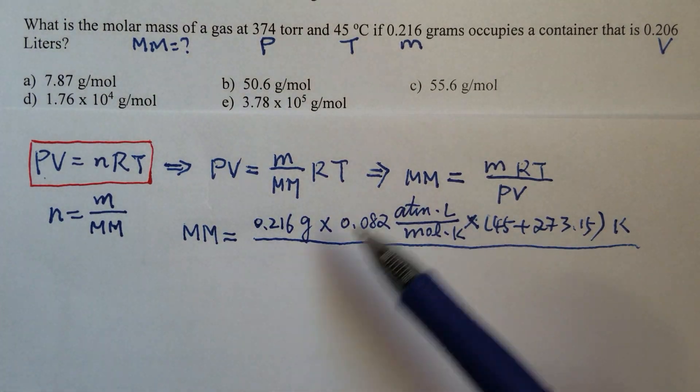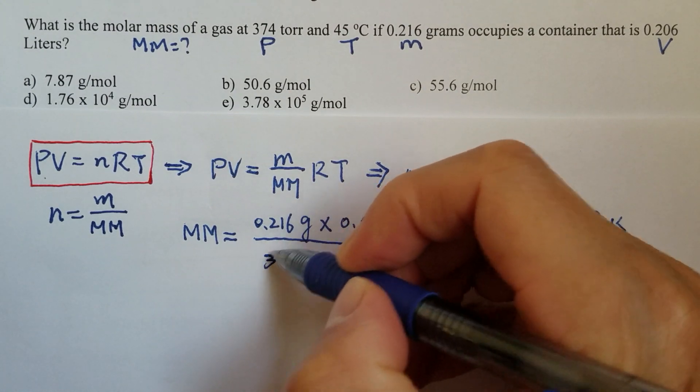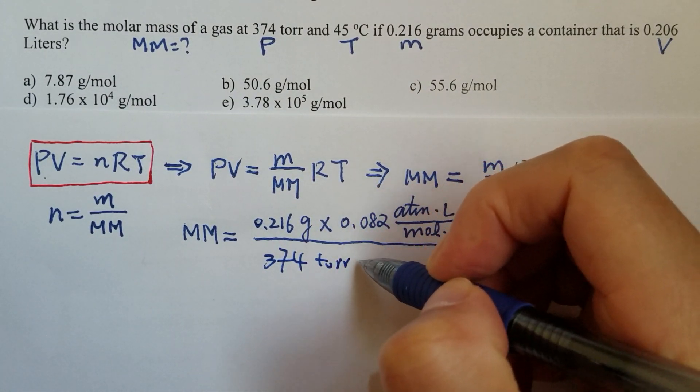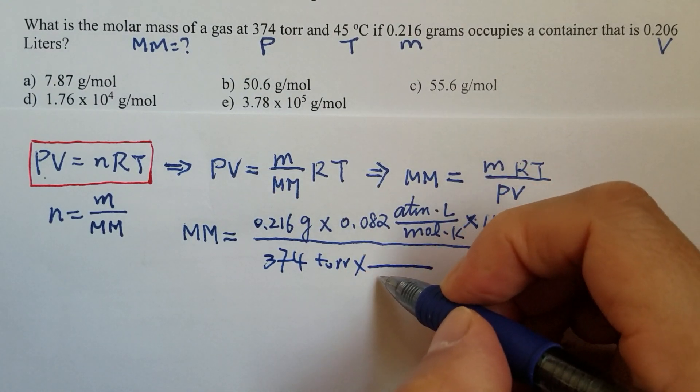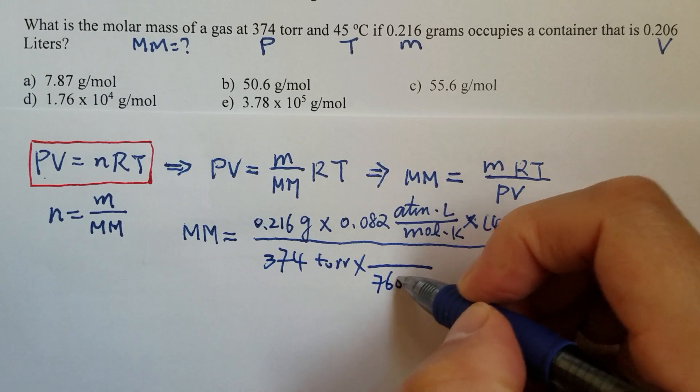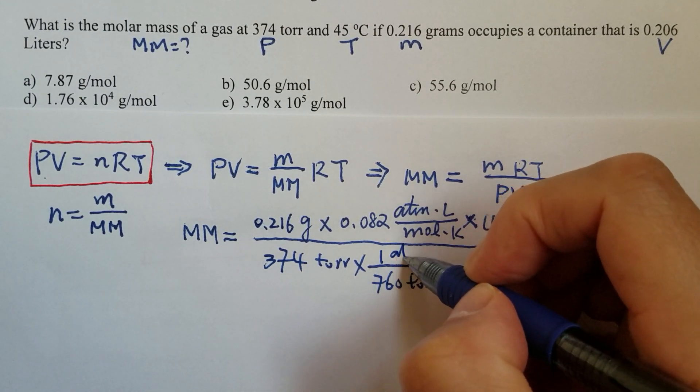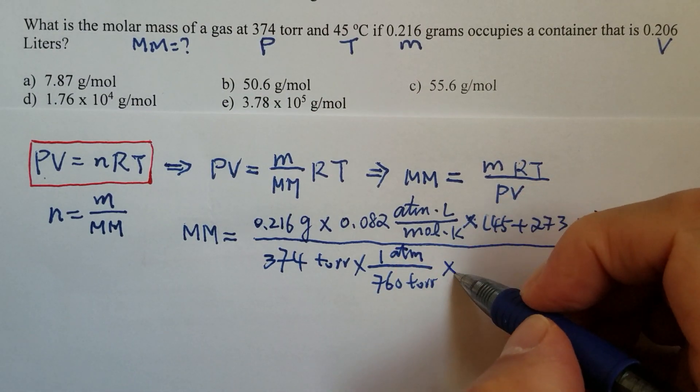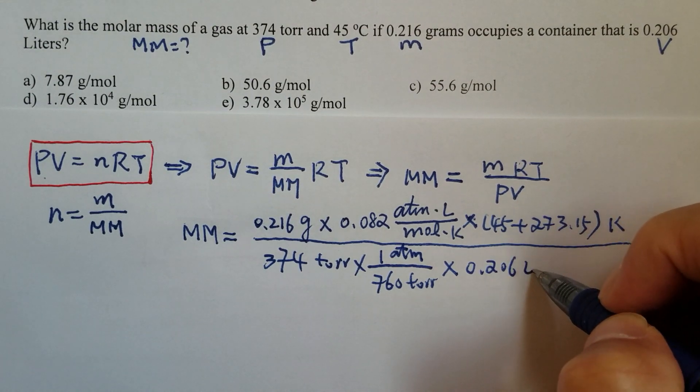Divided by the pressure, 374 torr. Make sure we have to convert that to atmosphere, times V, 0.206 liters.